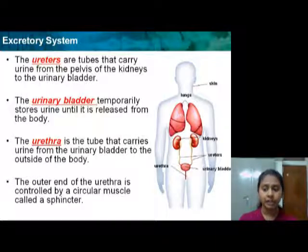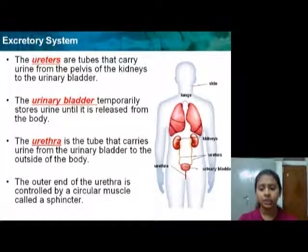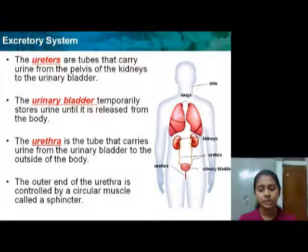The urethra is the tube that carries urine from the urinary bladder to the outside of the body. The outer end of the urethra is controlled by a circular muscle called the sphincter.